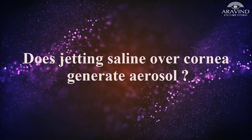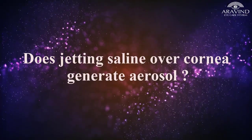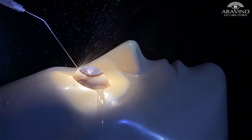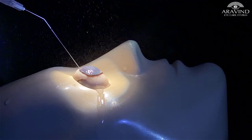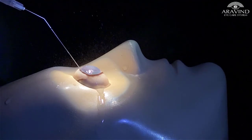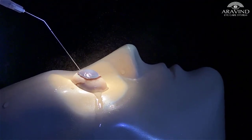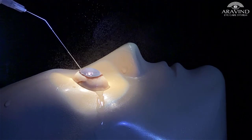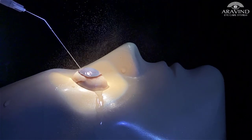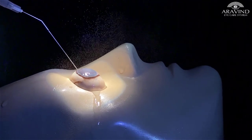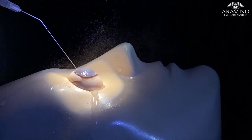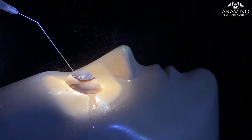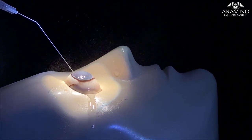Does jetting saline over the cornea generate aerosol? As you can see, jetting of saline with a cannula to wet the cornea generates significant aerosols. Aerosol generation is more with turbulent flow and an irregular surface.